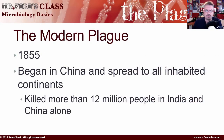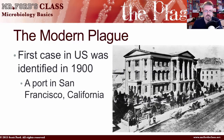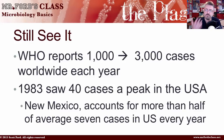The modern plague started in 1855, beginning in China and spreading to all inhabited continents, killing more than 12 million people in India and China alone. The first case in the U.S. appeared in the early 1900s at a port in San Francisco, traced back to China. Yersinia pestis has not disappeared — the WHO reports 1,000 to 3,000 cases worldwide each year. In 1983 the U.S. saw a peak of 40 cases, and New Mexico accounts for more than half of the average seven annual U.S. cases.